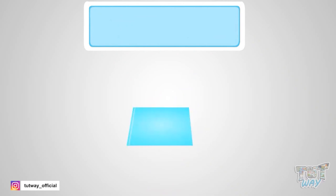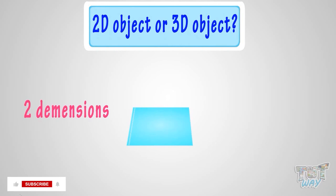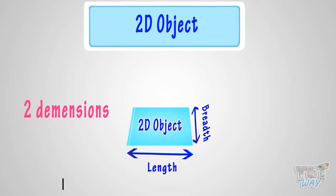Now one more object. We have to tell: is it a 2D object or a 3D object? It's a paper. This object has only two dimensions, length and breadth, and also we cannot put something in this object. So, it's a 2D object.